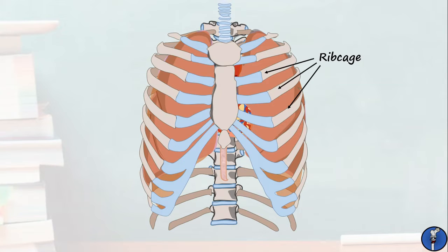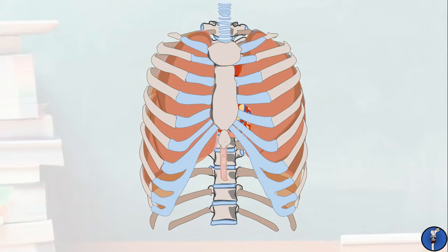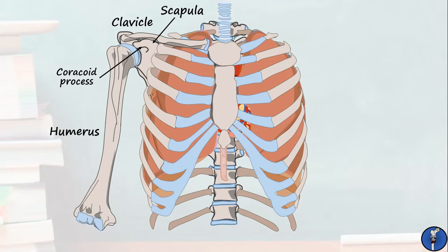The costal cartilages of the ribs, coloured blue here, articulate with the sternum, which itself is composed of three parts. From superior to inferior, these are the manubrium, the body, and the xiphoid process. The remaining notable bones are the clavicle, or collarbone, which goes from the manubrium to the acromion of the scapula. Then of course the scapula, which has a bony projection anteriorly known as the coracoid process. And the humerus, which articulates with the scapula.